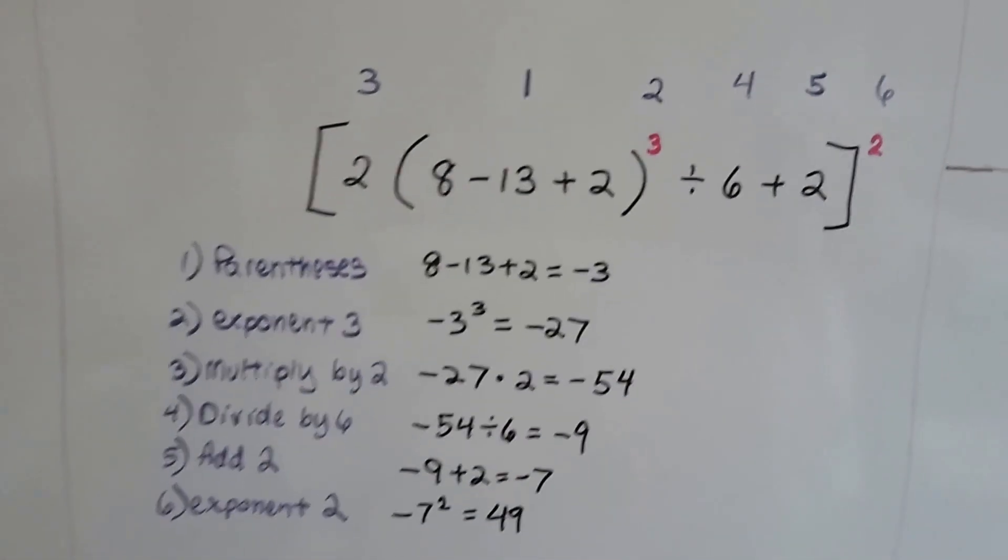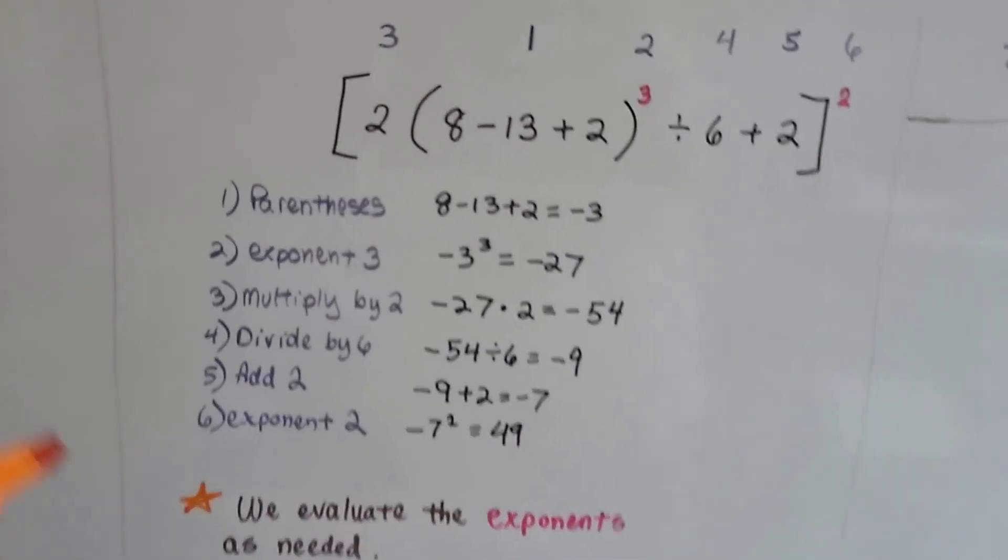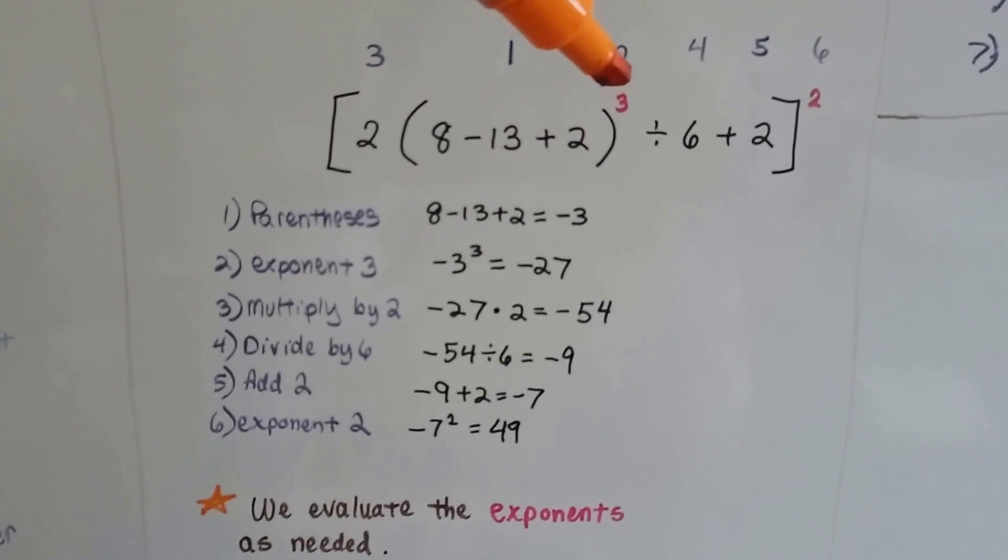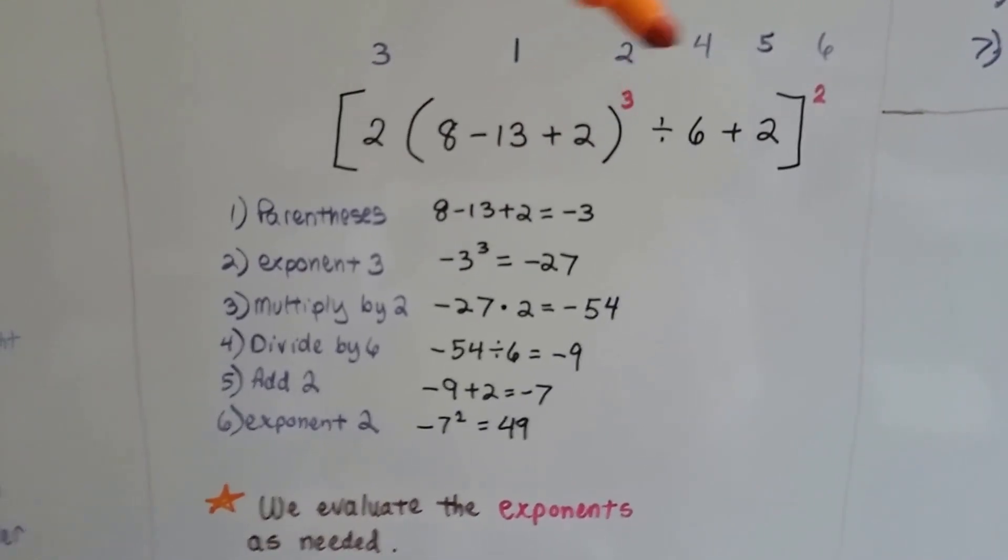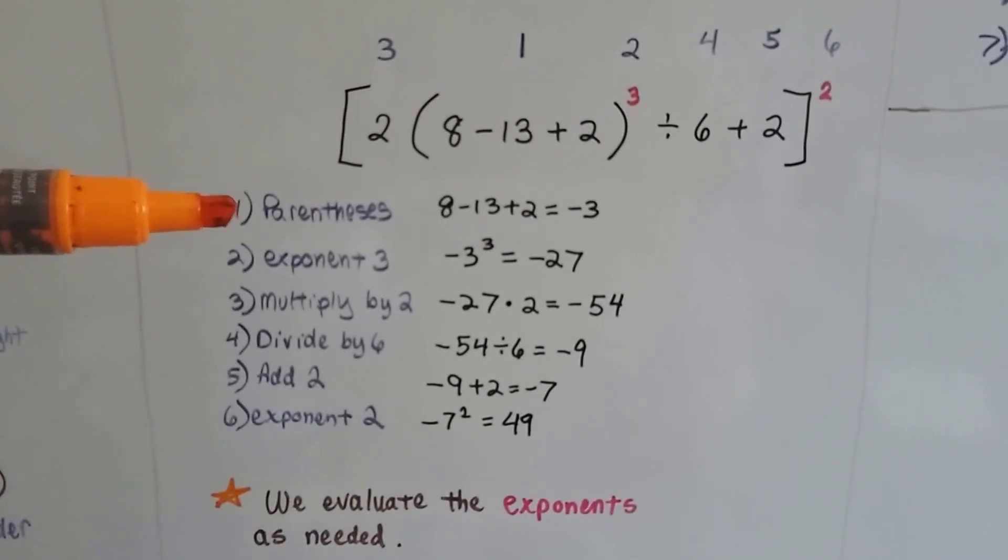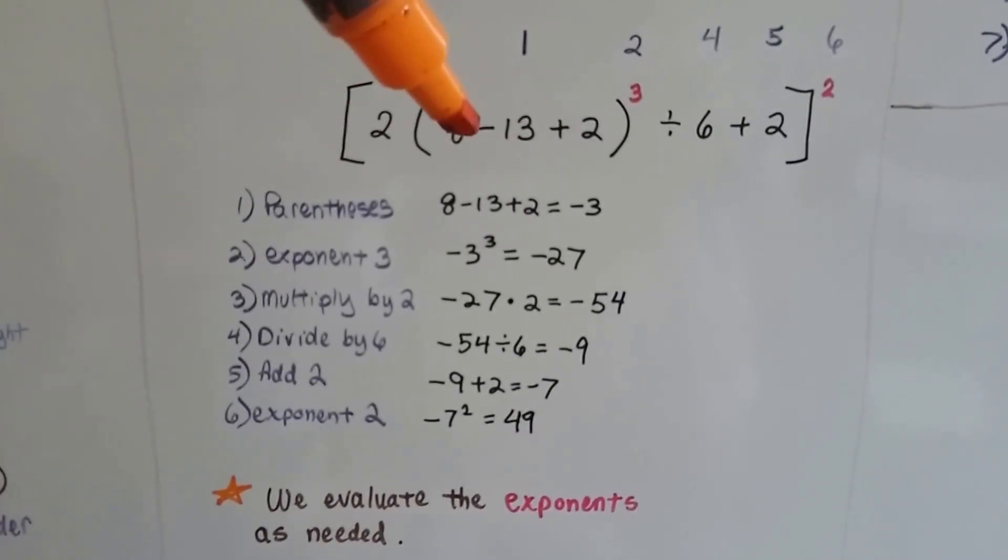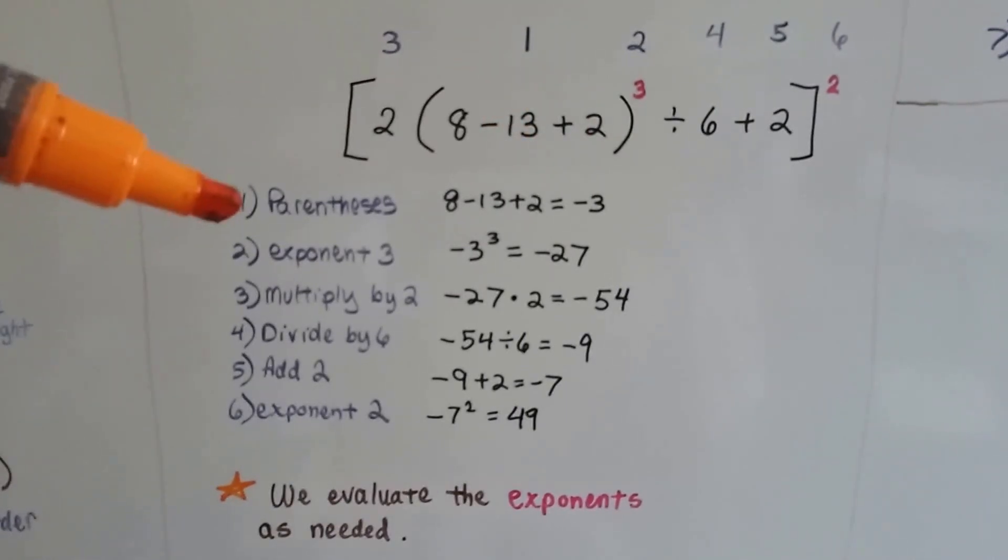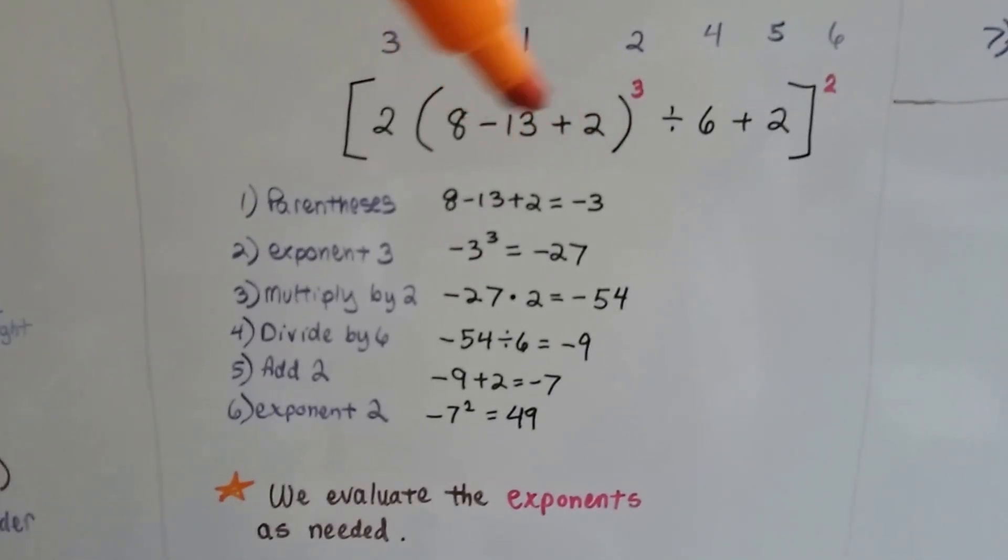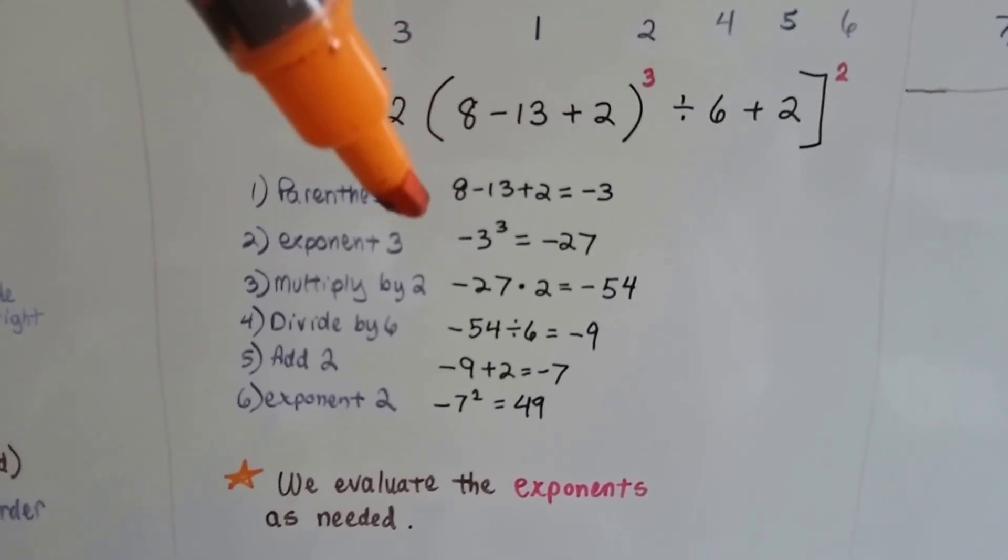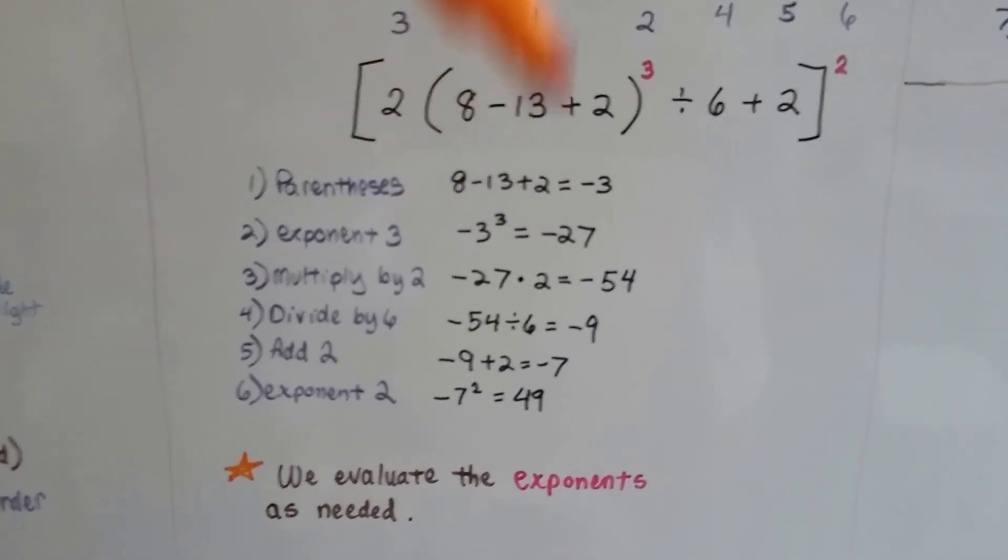Now look at this one. We have 6 steps to this one. We're going to evaluate the exponents as needed, because we have one here on the inside of the brackets and we have one here on the outside. So the first thing we're going to do is inside the parentheses, we're going to do this 8 minus 13 plus 2. That's going to give us a negative 3. Now, because this is a base, we have to do this little 3 exponent. Negative 3 to the third power is negative 27.